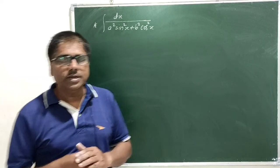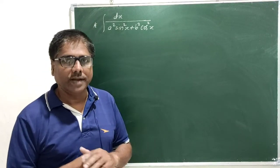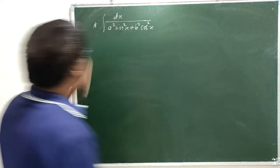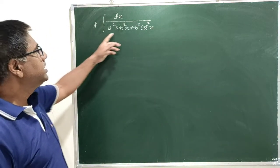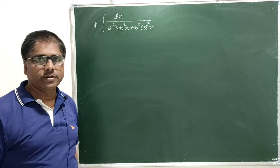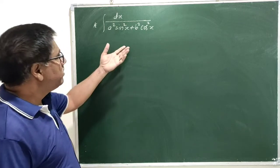Hello friends, in this video let us solve one problem on indefinite integral. This is our problem: integral of 1 upon a square sin square x plus b square cos square x. This is one form of integral.